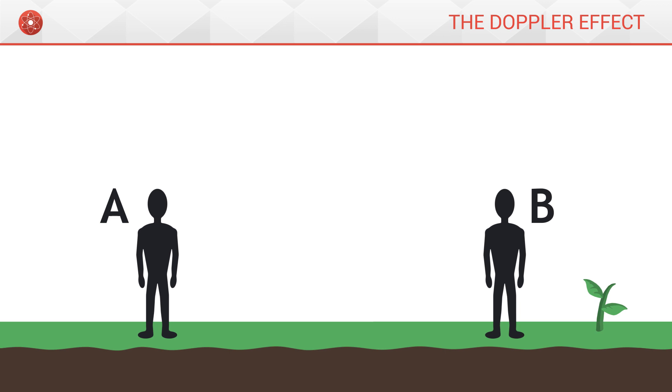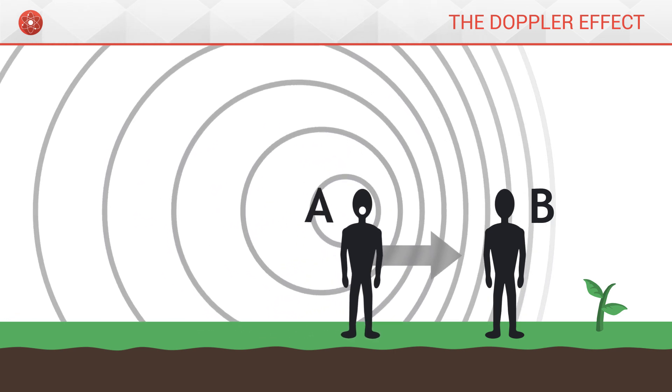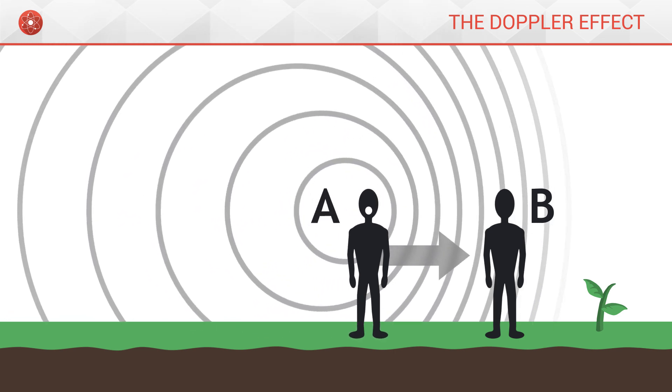Now let's take a look at what happens if A gets closer to B. We see that the waves in front of A get squashed. This implies that their frequency increases as the distance between two waves grows smaller.